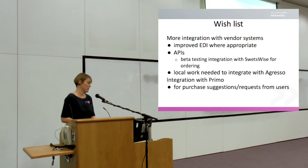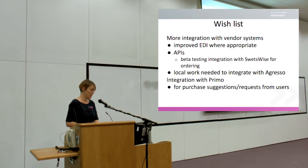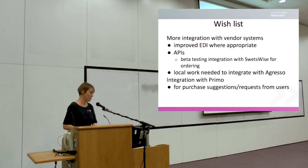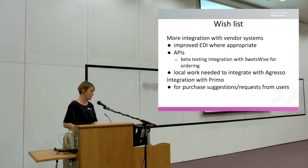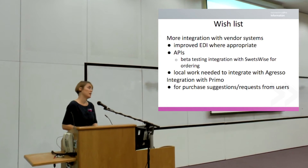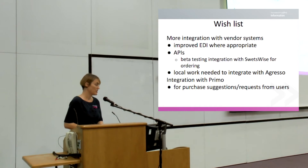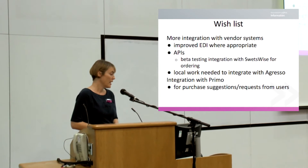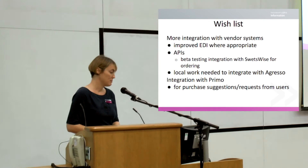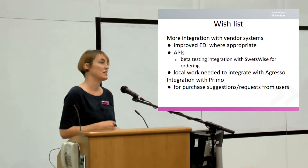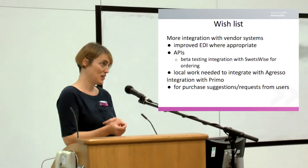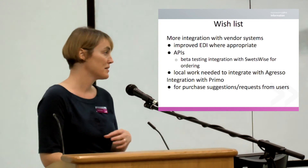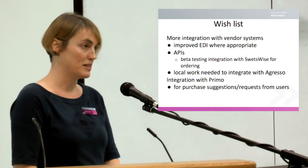We know we need to do local work to integrate with Agresso, as already mentioned. We'd also like to see from Ex Libris — on the roadmap for 2015 — integration with Primo, so users could fill out a suggestion form in Primo that would create an order record in Alma. Ideally that could then be transferred to interlibrary loans if we decided not to order it, or vice versa — an interlibrary loan request could be converted into an order.